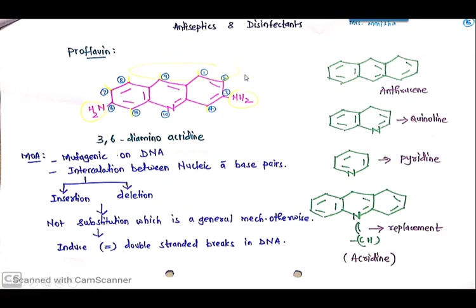Now as you can see, at 3rd position there is one NH2, and at 6th position there is one NH2. These are amine groups at the 3rd and 6th positions. So it is 3,6-diamino and this complete fused ring is acridine. So the name will be 3,6-diamino acridine.